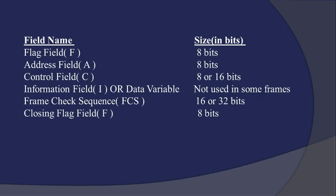Next, there are the typical fields showing how much data each bit can store. The flag field is 8 bits. The address field is 8 bits. The control field can be 8 or 16 bits. The information field is not used in some frames. The frame check sequence (FCS) is 16 or 32 bits. And the closing flag field is 8 bits.